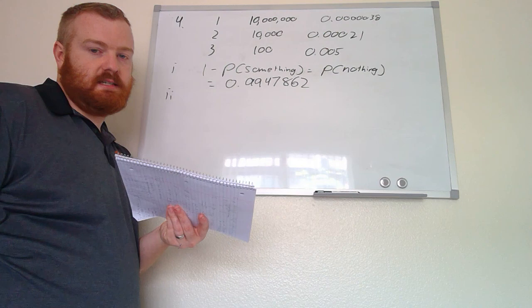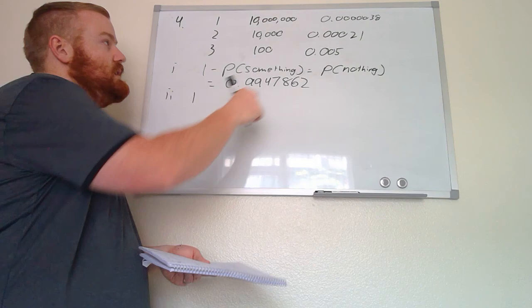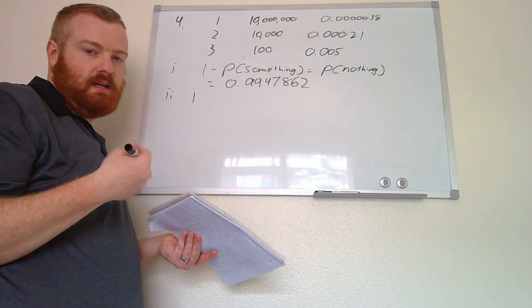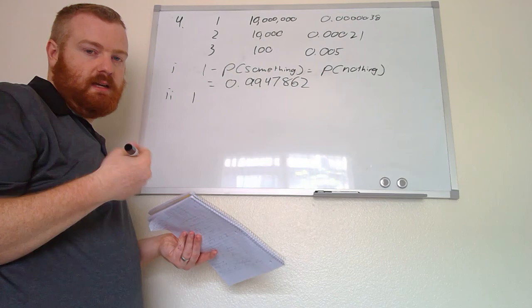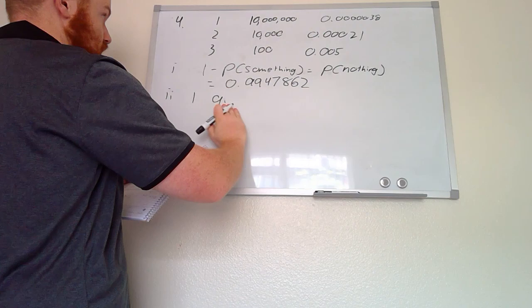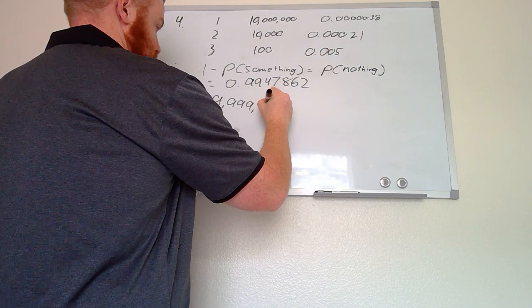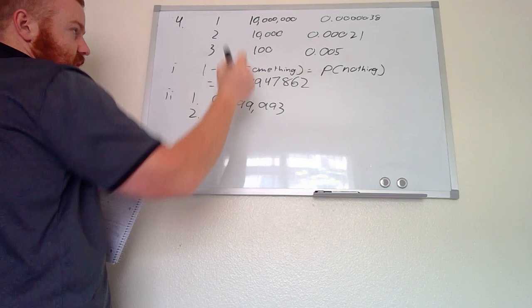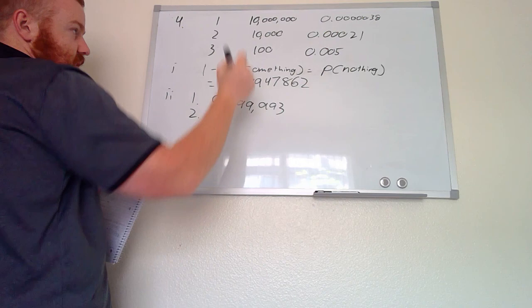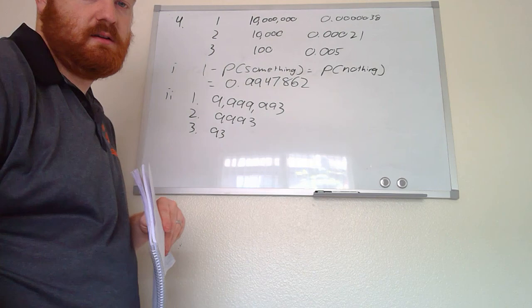For part two, if a lottery ticket costs $7, we find the value of each outcome by subtracting the $7 ticket cost from each payout. For the grand prize: $10,000,000 minus $7 gives $9,999,993. For second place: subtract $7 to get $9,993. For third place: subtract $7 to get $93.